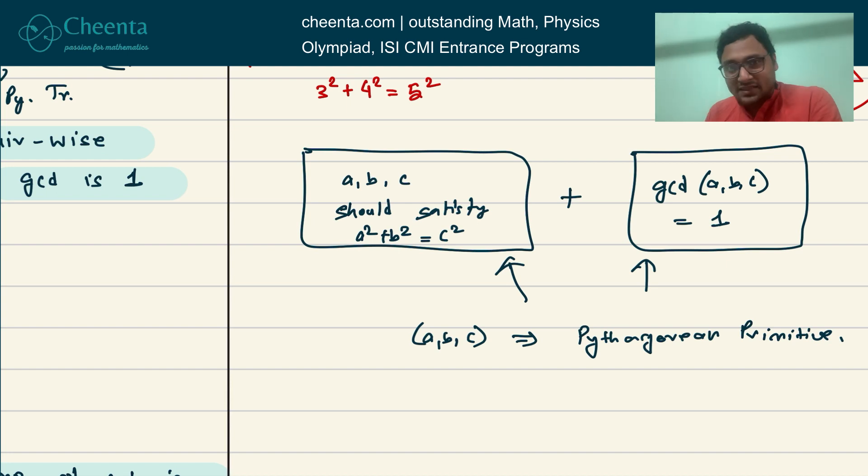If both of these conditions are satisfied, then we say that this is a Pythagorean primitive. So we understand what this is all about.